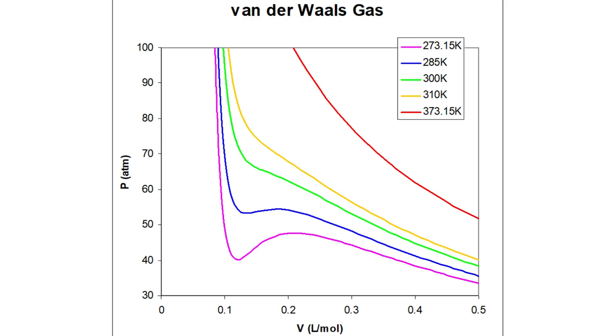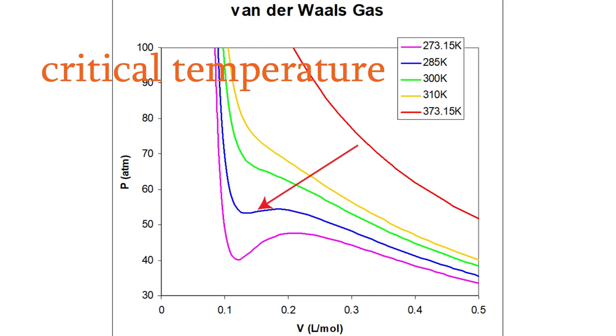The temperature at which we get this horizontal isotherm is called the critical temperature. Above the critical temperature, the substance can only be a gas, no matter what the pressure is. But below that temperature, the gas will be able to liquefy at some pressures.